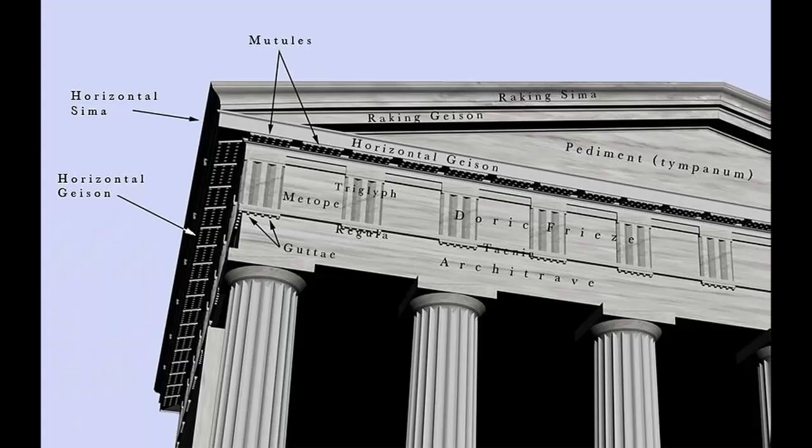This also applies to buildings, and has done for a very long time. The decorative stone features used in the Doric order of classical architecture and Greek temples were recreations of functional items in the wooden temples that preceded them, such as the triglyph and guttae, which would have been the beam ends and the pegs driven in to secure the beam into place.